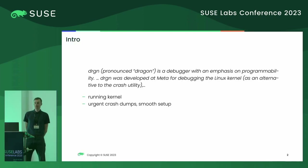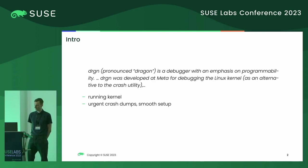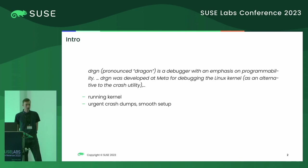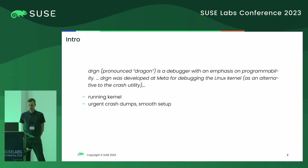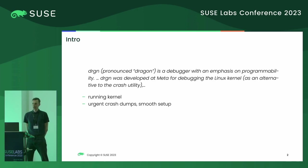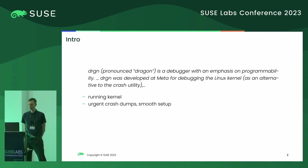So what is Dragon? This is an extract from the readme file, which says that Dragon is a debugger with an emphasis on programmability. Dragon was developed at Meta for debugging the Linux kernel as an alternative to the crash utility. It got my curiosity because it was often shown that it can debug the running kernel, and I was wondering whether the tool could be used also for ordinary crash dumps and how smooth such a setup would be in comparison with the traditional crash utility from the user convenience perspective.